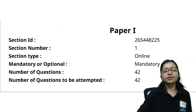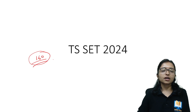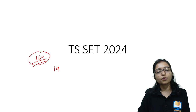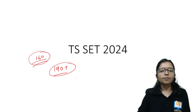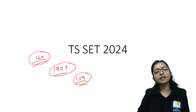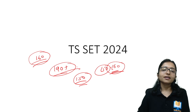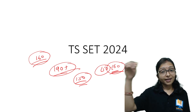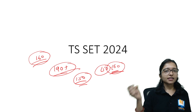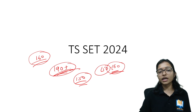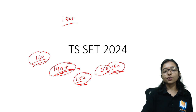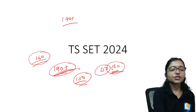Regarding the cut-off, as per our group data, the cut-off will be around 160. We are seeing scores above 190 and the average is around 150, so the cut-off will likely be between 150 and 160 — probably 160. Those who scored 180 to 190 will definitely crack it. You can also write your score in the comment section so I can estimate the exact cut-off. Best wishes, see you soon in our next video!